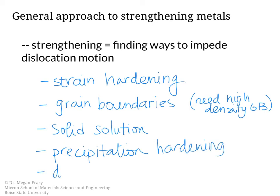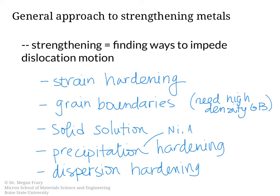One last way is dispersion hardening. Dispersion hardening is similar to precipitation hardening in that both have a second phase present that causes dislocations to slow down. The difference is that in dispersion hardening, it's a second phase entirely separate from the composition of the first phase, whereas precipitates are derived from the alloy composition. For example, in a nickel-aluminum alloy you might have Ni3Al precipitates, while an example of dispersion hardening would be ZrO2 zirconia particles in an iron alloy.